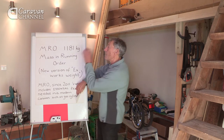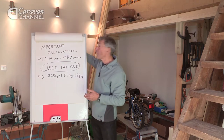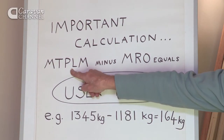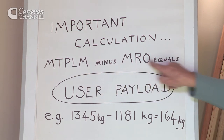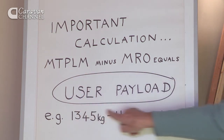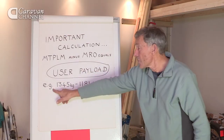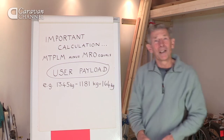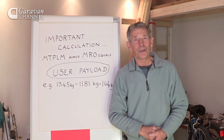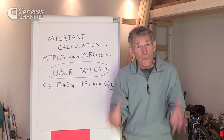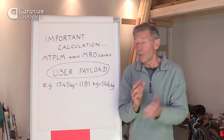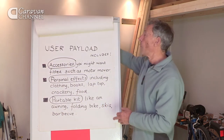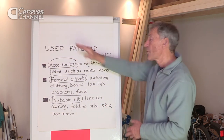Remember MRO, because now we've got to do an important calculation. That maximum permitted weight, taking away the MRO, equals something called user payload. In this case the sums end up with a figure of 164 kilograms, which relates to everything that you can load in or accessories you can fit — the absolute maximum is 164 kg.